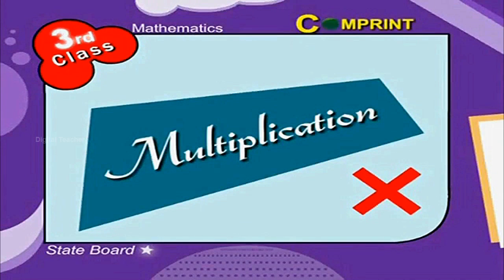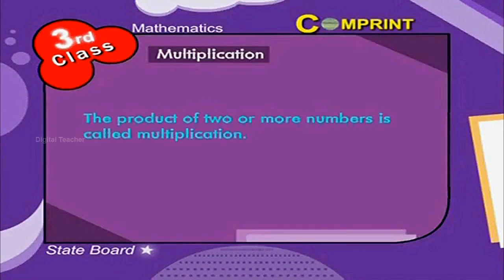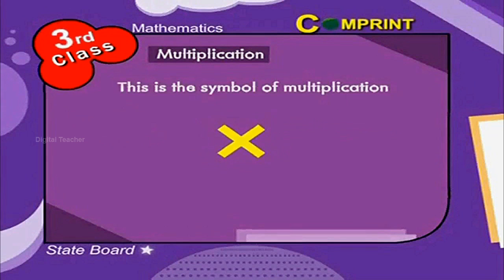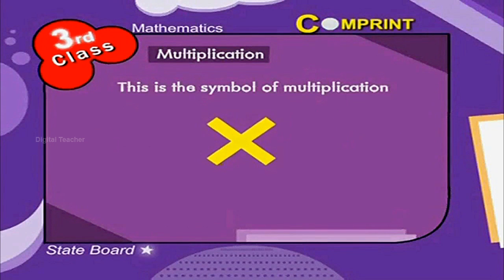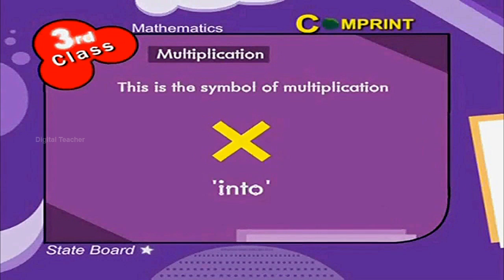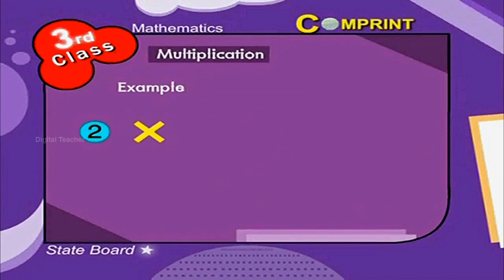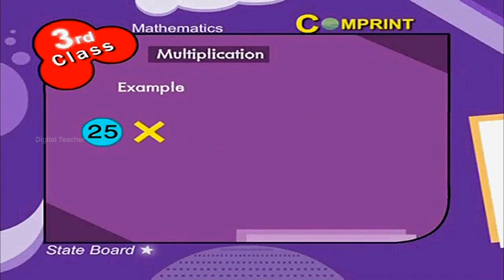Multiplication. The product of two or more numbers is called multiplication. This is the symbol of multiplication. It is called 'into'. For example, 2 into 3 is equal to 6, and 25 into 2 is equal to 50.